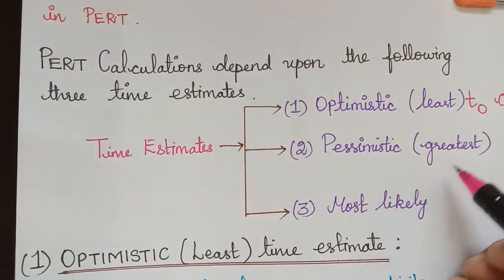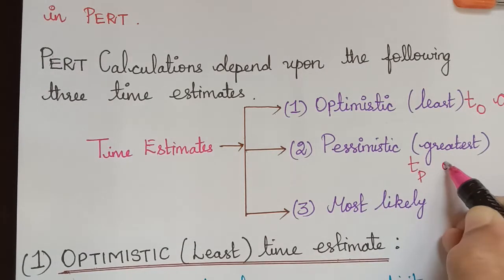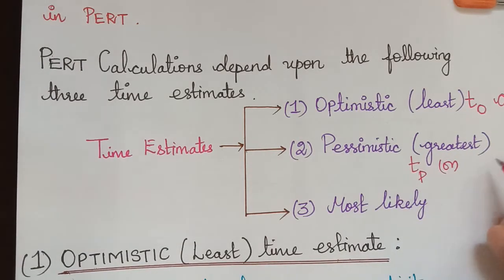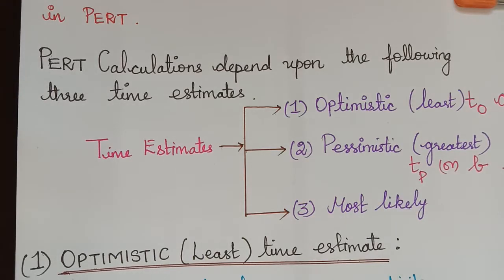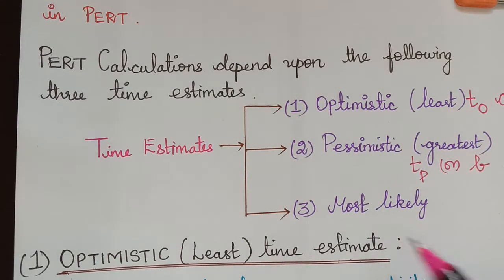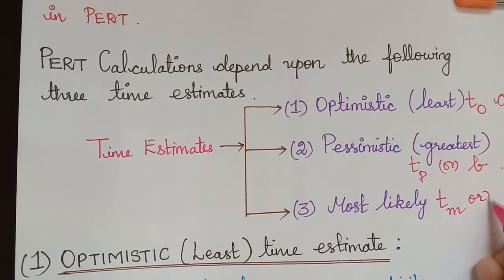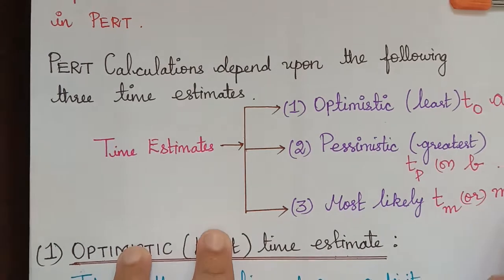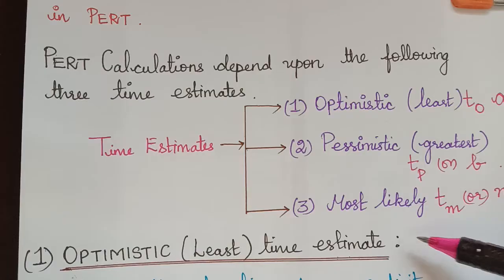The pessimistic time estimate is represented as TP, or sometimes it may also be represented as the alphabet 'b'. And the most likely time estimate is represented as TM. So these are the three time estimates that we have.